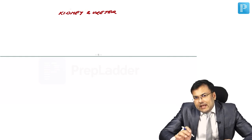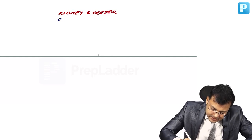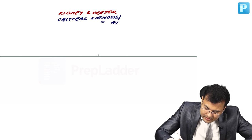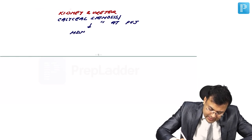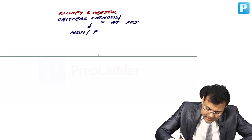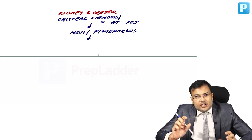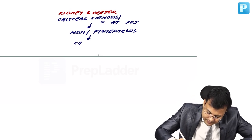In the kidney and ureter, there is calyceal stenosis or stenosis at the pelviureteric junction (PUJ). Because of this stenosis there is obstruction, leading to hydronephrosis. Rather than pyonephrosis initially, there is collection of cheesy material — this is caseous necrosis.